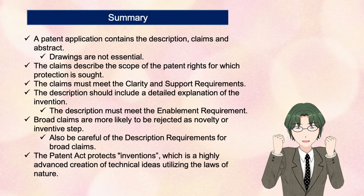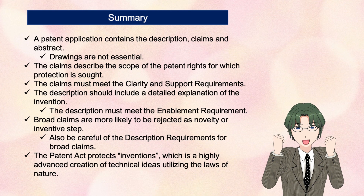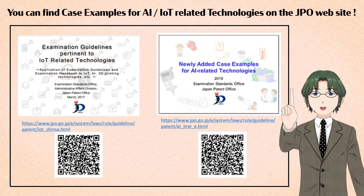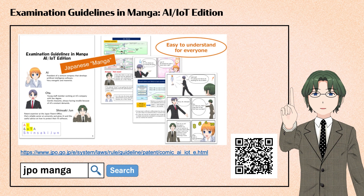Here is a summary of this video. A patent application contains the description, claims, and abstract — drawings are not essential. The claims describe the scope of the patent rights for which protection is sought, and must meet the clarity and support requirements. The description must meet the enablement requirement. Broad claims are more likely to be rejected on novelty or inventive step grounds, so be careful of description requirements for broad claims. The Patent Act protects inventions as highly advanced creations of technical ideas utilizing the laws of nature. You can find case examples for AI and IoT-related technologies on the JPO website. You can read the rest of this manga on the JPO website — please check it out.